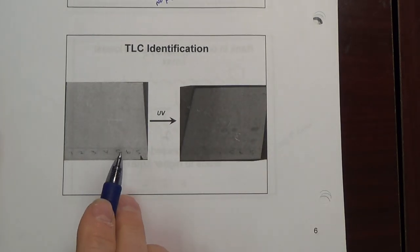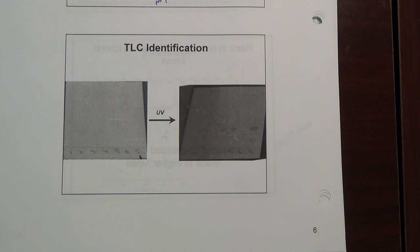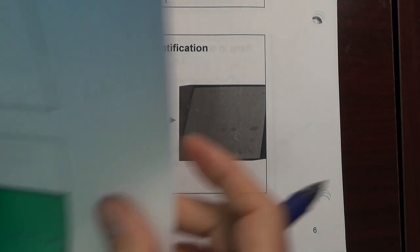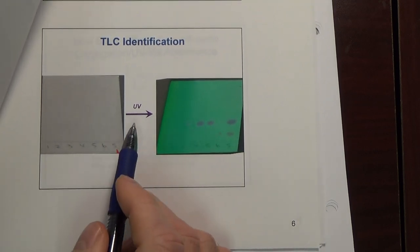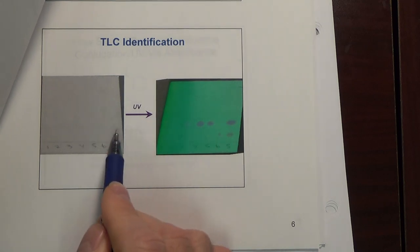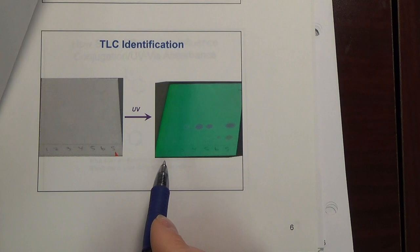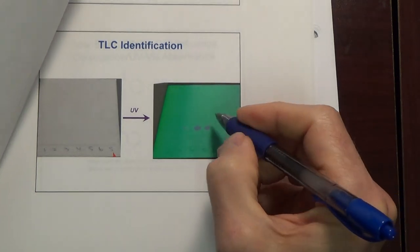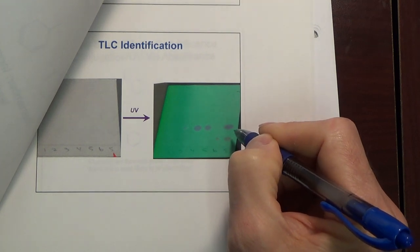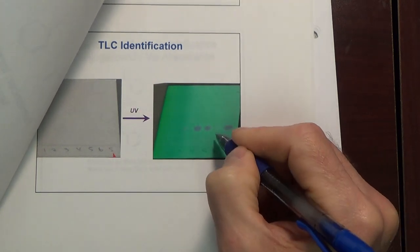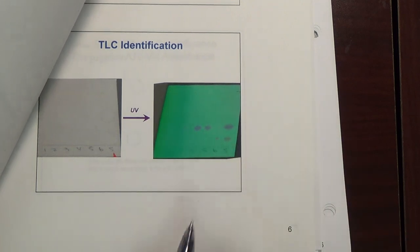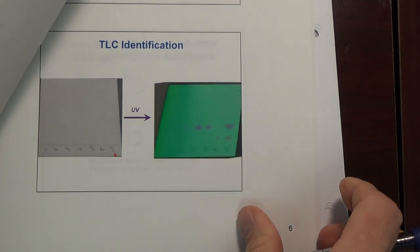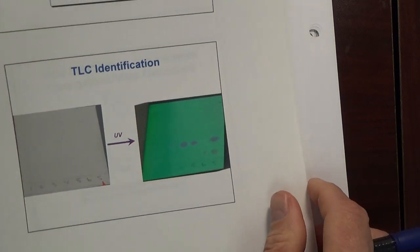TLC — the picture is black and white in the handout, but there's a color picture in the original file. Not much to say here other than you do use UV in the lab whenever you look at your TLC plates. Not all compounds will show up under UV light — they typically have to have some conjugation — but you do use UV to visualize your TLC plates.